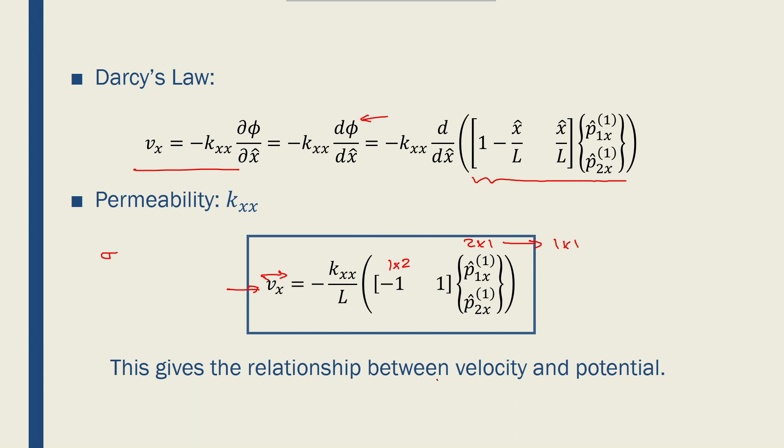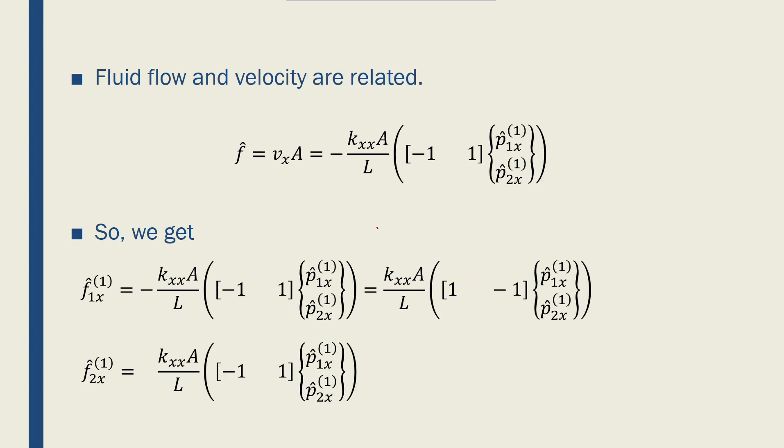So far we've got the relationship between the velocity and potentials in an element. Now we need to find the relationship between the fluid flow rate and potential. Fluid flow rate and velocity are related through this equation: f is equal to v times A. And we know that v is related to φ, or to p's.